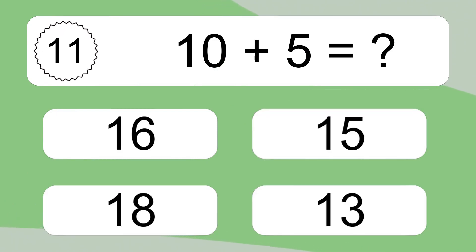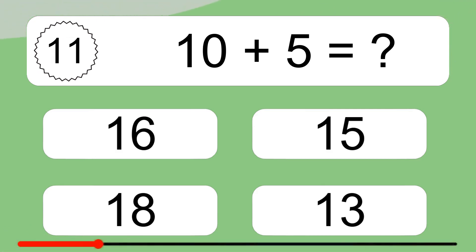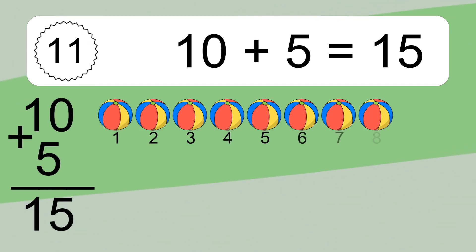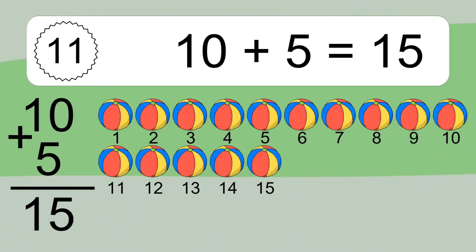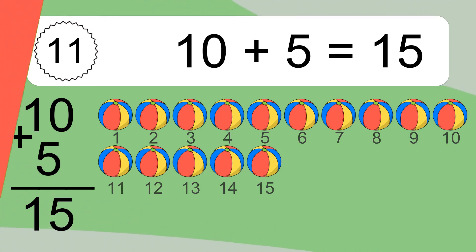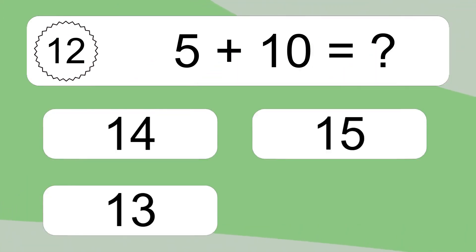10 plus 5 equals what? 10 plus 5 equals 15. Let's count it. 1, 2, 3, 4, 5, 6, 7, 8, 9, 10, 11, 12, 13, 14, 15.